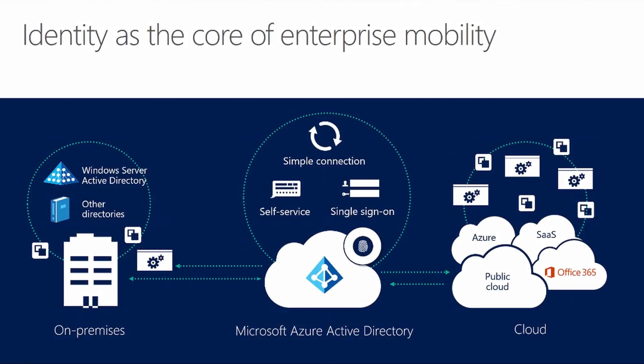What Microsoft has seen is that identity has become the core of enterprise mobility. Protecting identities within the cloud, on-premises, and in hybrid environments has become one of the main focuses of CIOs and even CEOs, because an identity breach has become a CEO-level issue. With identities in regards to Office 365 and other cloud applications, Azure Active Directory Premium allows you to sync your on-premises identities from Windows Server Active Directory or other directories like PeopleSoft or SAP up into Microsoft Azure Active Directory. The premium features allow you to control access scenarios like conditional access.